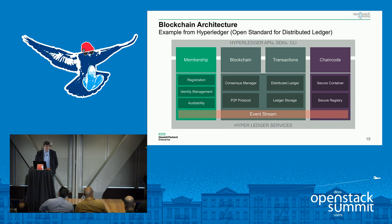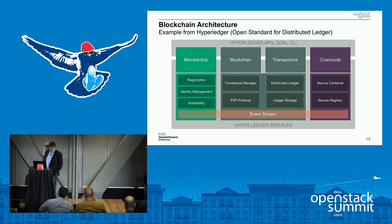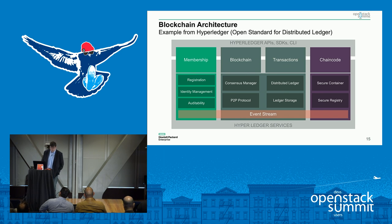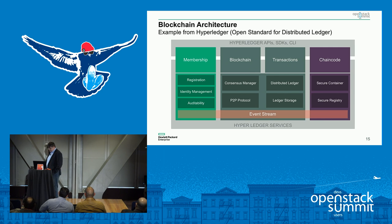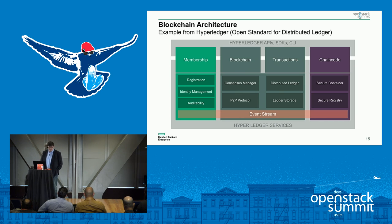There's a project called the Open Standard for the Distributed Ledger — IBM are big in this at the moment. They've come up with an architecture of components needed for blockchain to be successful. The first is membership. The Bitcoin addresses for Person A and Person B are proof that you're a member of this network and participating in this ledger. You need a way for a customer to register and prove their identity — in Bitcoin it was the public-private key. You can also use certificates or challenge-and-response.